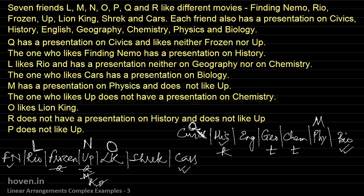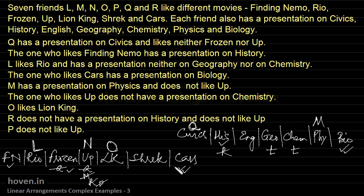Next, Q cannot come under FN because Q is already allocated to Civics and FN is paired with History. Q also cannot come under Cars since Cars is paired with Bio. With Frozen, Up, FN, and Cars all eliminated, the only remaining movie for Q is Shrek. So Q is allocated to Shrek.